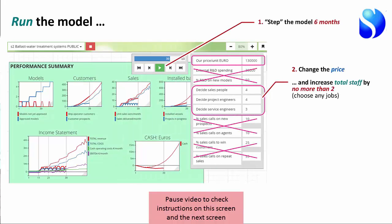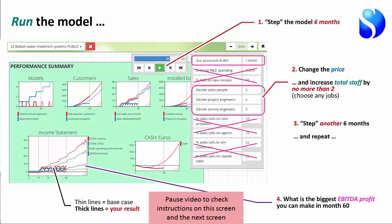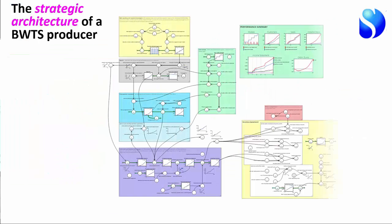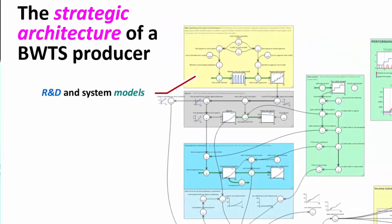So let me explain what this model actually looks like. This is the whole model. That's the performance summary I just showed you, and it's simply extracted from all these parts of the working model. This piece up here is the R&D to create new models. This is models awaiting approval. The equipment has to be approved by the International Maritime Organization and the US Coast Guard. They have a plan to develop models at a certain rate and release new models.